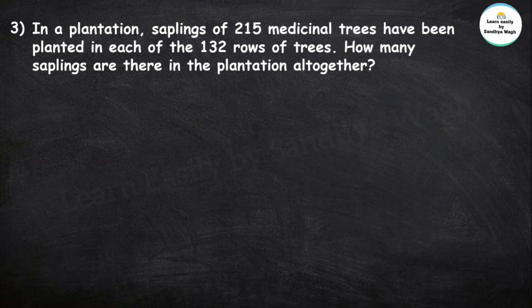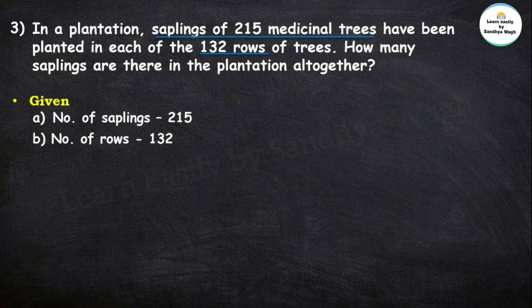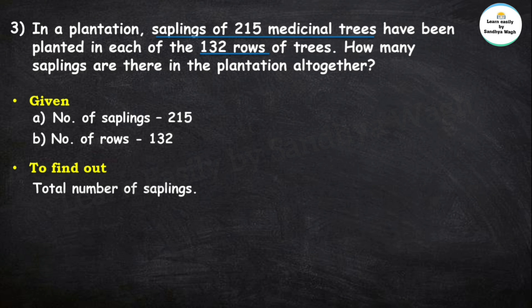The given information is: number of saplings is 215, number of rows is 132. We need to find out the total number of saplings in the plantation.